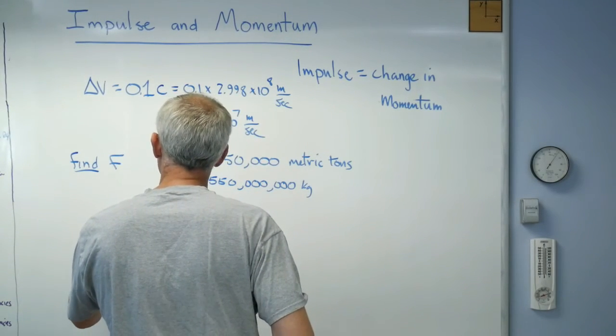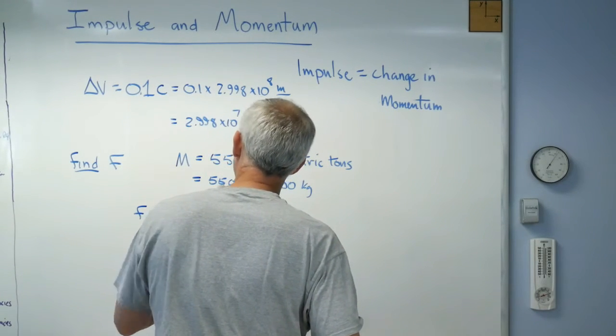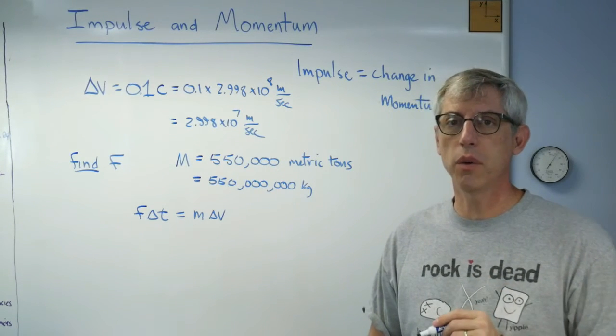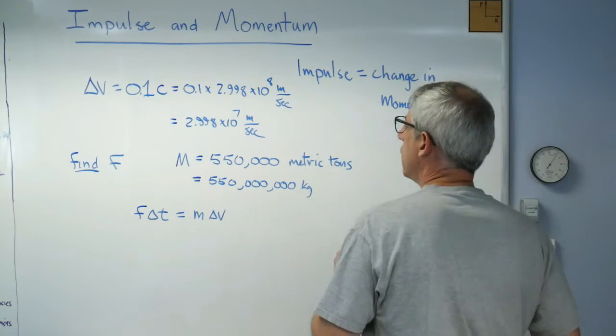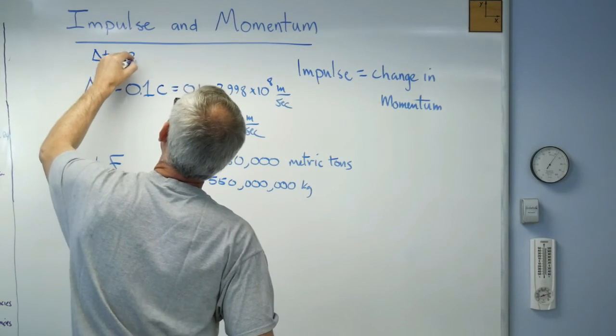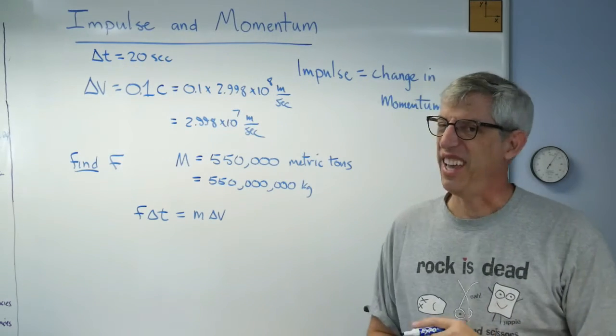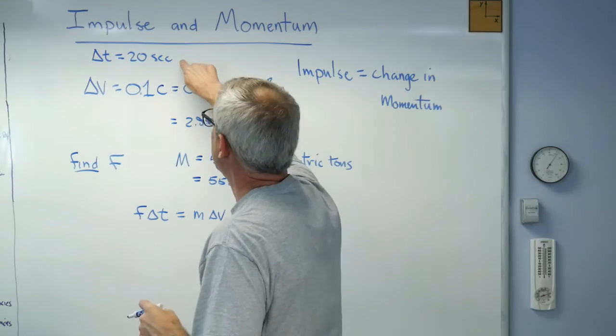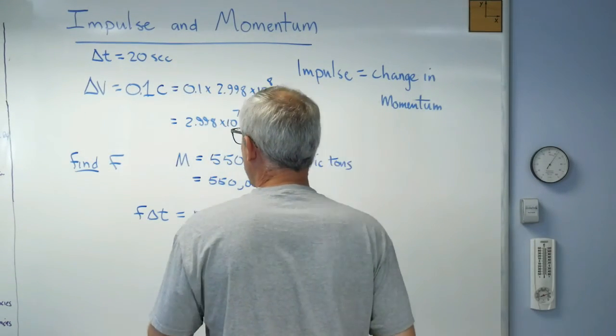So run through the numbers again. We had FΔt, which is impulse, equals MΔV. Oh, by the way, impulse power, Mr. Sulu, get us to 0.1C. How long? How long do I have? All right, we will assume that they get there in 20 seconds. In the TV show, it never takes them that long. It's always almost instantaneous, but I'm going to try to keep this somewhat reasonable and say, well, there's 20 seconds to get to 0.1 light speed.